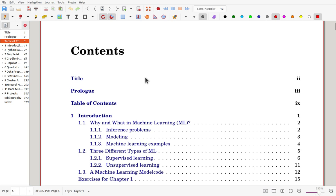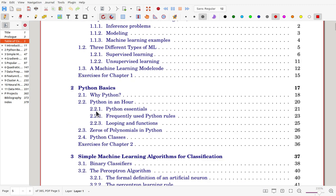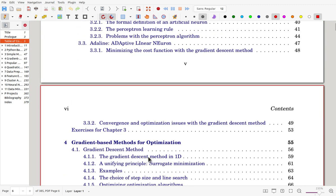Let's see a table of contents. In the beginning, we'll start with an introduction on machine learning. And because most machine learning algorithms are with Python, we'll study Python basics. And we'll deal with simple machine learning algorithms for classification. Then, we study gradient-based methods for optimization,